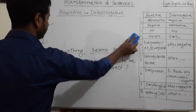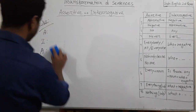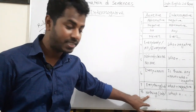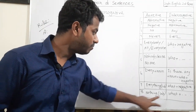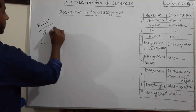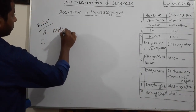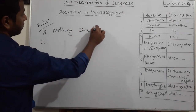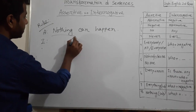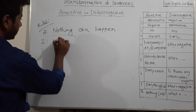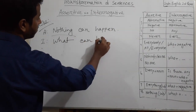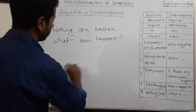Last rule: if in an assertive sentence there is 'nothing' as subject, we use 'what' instead of 'nothing', and the rest of the sentence remains the same. For example: 'Nothing can happen.' Interrogative: 'What can happen?'